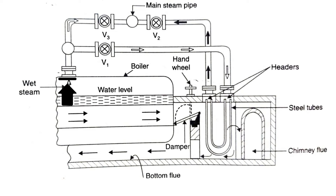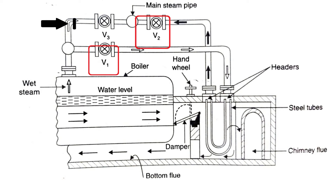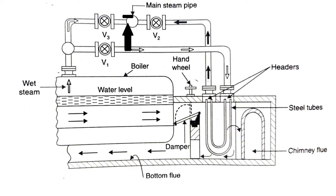Now we will discuss the working principle of the superheater. Steam from the boiler enters and leaves the headers as shown by the arrows, also showing how the steam pipes may be arranged to pass the steam through the superheater or directly to the main steam pipe. When the steam is taken from the boiler directly to the main steam pipe, valves V1 and V2 are closed and V3 is open — so at that time steam is directly supplied to the turbine without passing through the superheater.